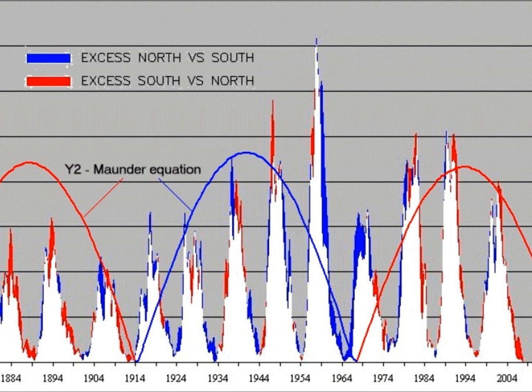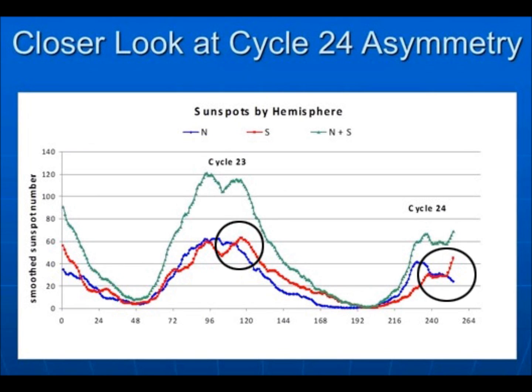Another set of data that might be interesting is the asymmetry of north versus south sunspots. In 1884 there was an excess of south versus north. Again, we start to follow the same pattern from 2004 forward — an excess of south versus north. You'll notice the divergence between north and south by hemisphere.